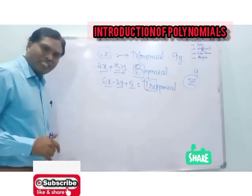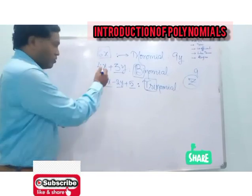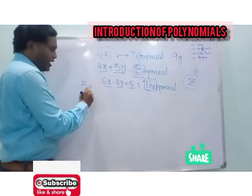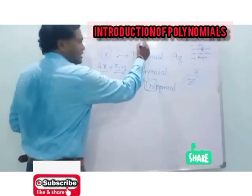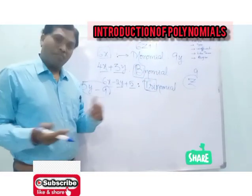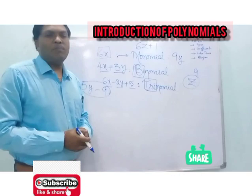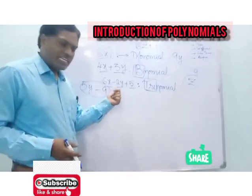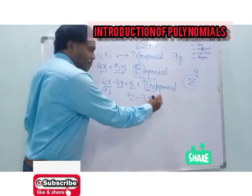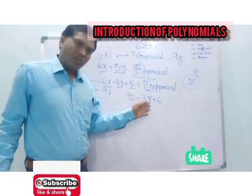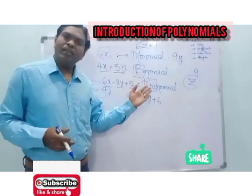Coming to binomial: if two terms are there, it is a binomial. For example, 5y minus 9 — two terms, binomial. And 6z plus 1 — two terms, binomial. For trinomial, we already took 6x minus 2y plus 5. One more example: 9z minus 3y plus 6 — we have three terms, therefore this is also a trinomial. So you can take your own examples of monomial, binomial, and trinomial.